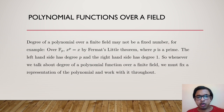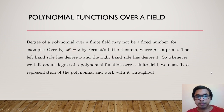The degree of a polynomial over a finite field may not be fixed. For example, over F_p (integers modulo prime p), the polynomial x^p − x is identically 0 by Fermat's Little Theorem, where x^p ≡ x for every integer x. The left side has degree p and the right side has degree 1. So whenever we discuss the degree of a polynomial function over a finite field, we must fix a particular representation and work with it throughout.